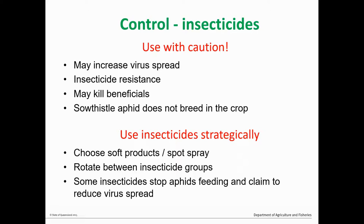Insecticides are often the main method used to control aphids, but they have some drawbacks. Some species, particularly green peach aphid, have widespread resistance to many commonly used insecticides. Insecticides can also kill beneficial insects and flare other pests. Sow thistle aphid doesn't breed in lettuce, so spraying the crop won't control that species. The efficacy of insecticides depends on the species of aphid, the type of virus, and the mode of action. Where possible, choose products that are less harmful to beneficials, and consider spot spraying or border spraying to conserve beneficial populations in unsprayed areas so they're ready to move back in.